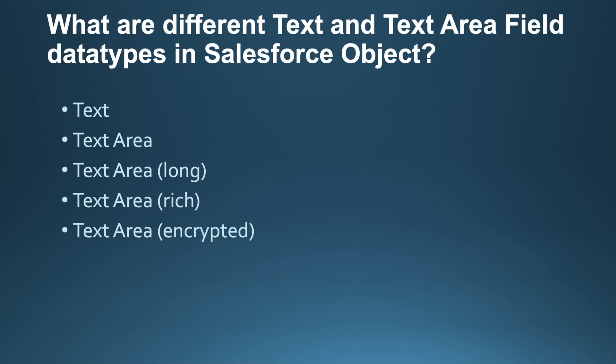Salesforce supports many different field types to store information, and the text field is one of the most commonly used field types. A developer can use text fields to store information like a name or to provide a description about products. Salesforce has five text type fields: Text, Text Area, Text Area Long, Text Area Rich, and Text Area Encrypted. In this video we will learn about and create these fields in a custom object.